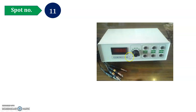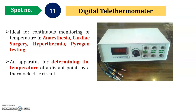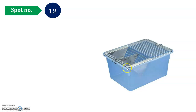Here is spot number 11. The name of that instrument is the Digital Rectal Thermometer. It is especially used for pyrogen testing and to check body temperature in animals. It is used in parenteral drug studies and specific pre-clinical animal studies.